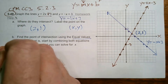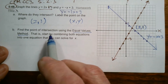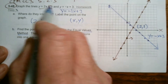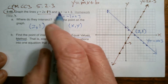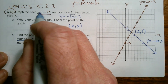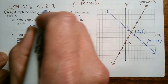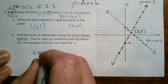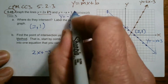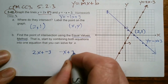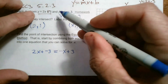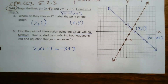There's also the equal values method. We use algebra, knowing we're looking for the place where both Ys are the same. So I set the two expressions equal to each other: 2x plus negative 3 equals negative x plus 3. I want to find where those two expressions are equal, because that's where the Ys are equal.